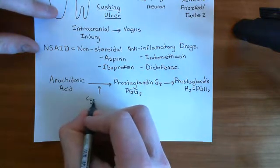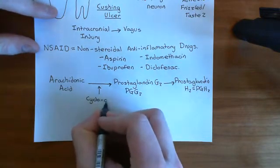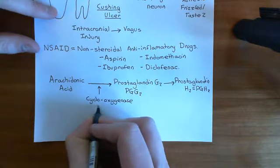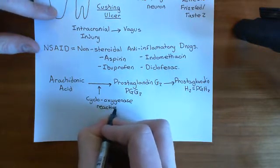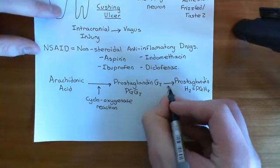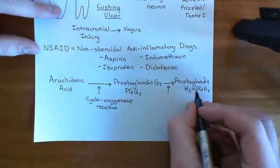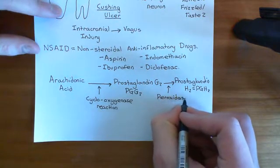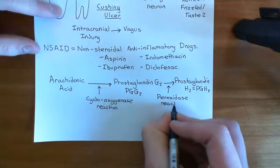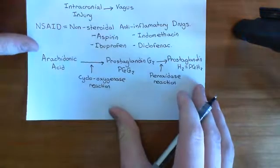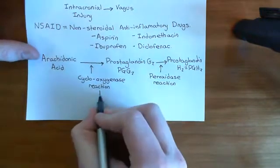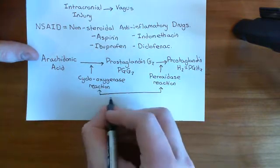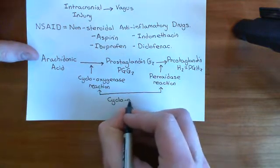These reactions actually have their own names. The first reaction, going from arachidonic acid into prostaglandin G2, is called the cyclooxygenase reaction. The second reaction, going from prostaglandin G2 into prostaglandin H2, is known as the peroxidase reaction. But both are catalyzed by cyclooxygenase enzymes.